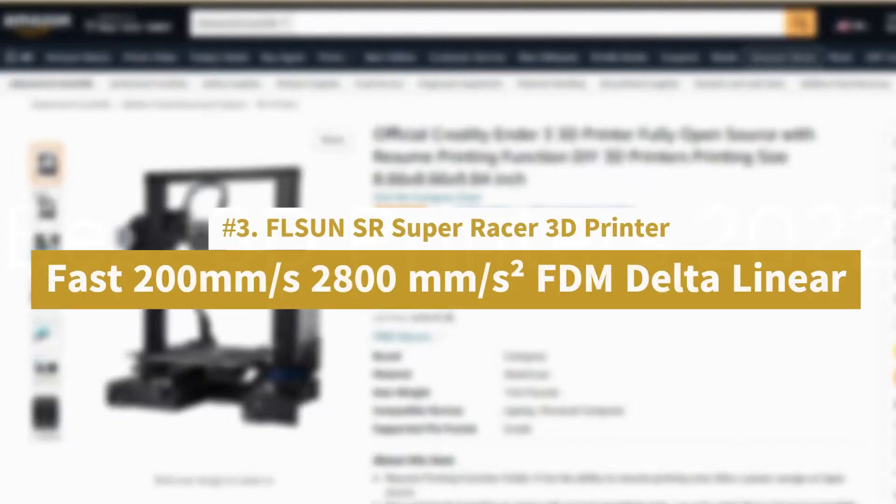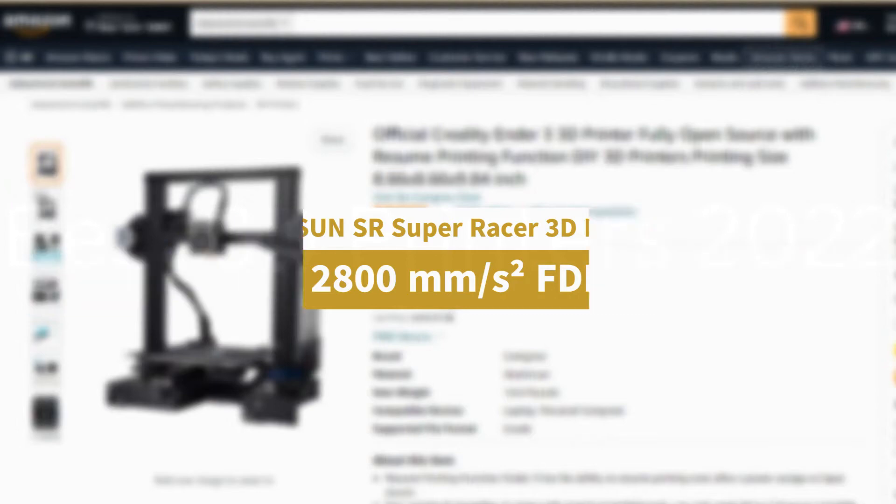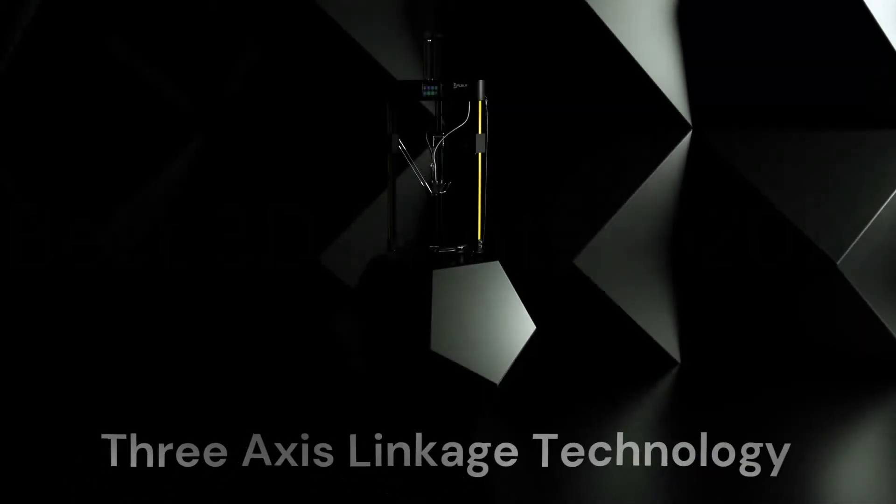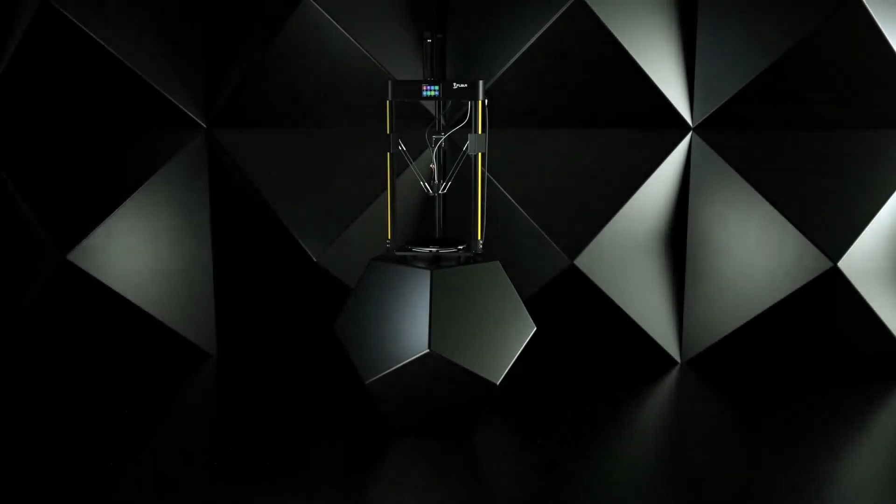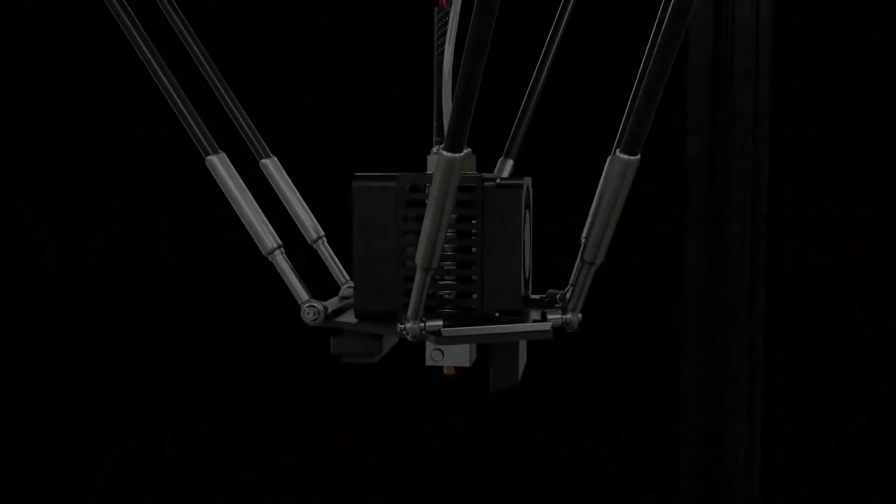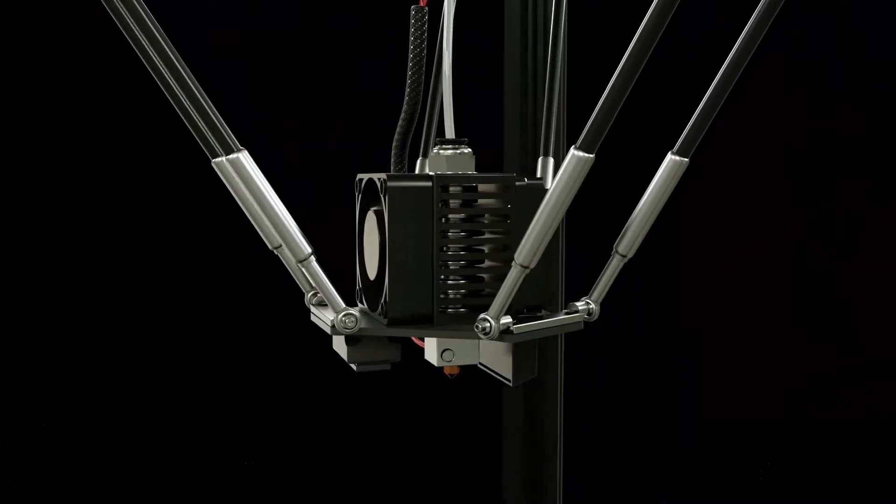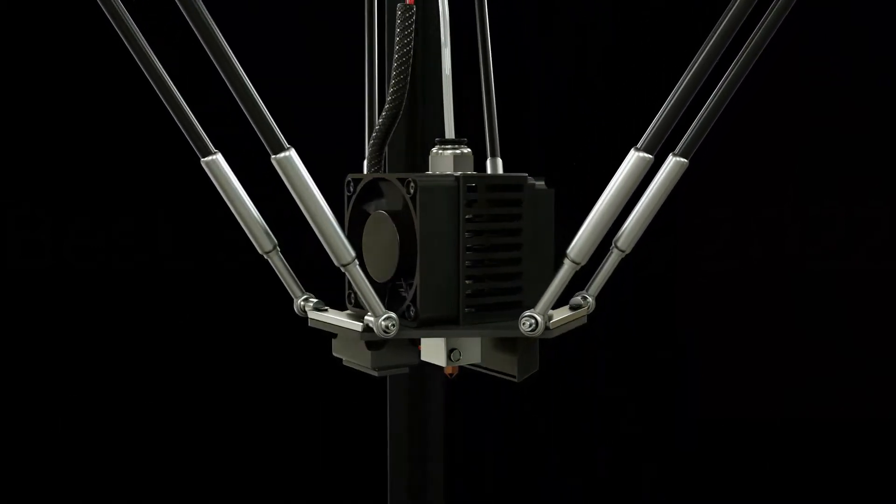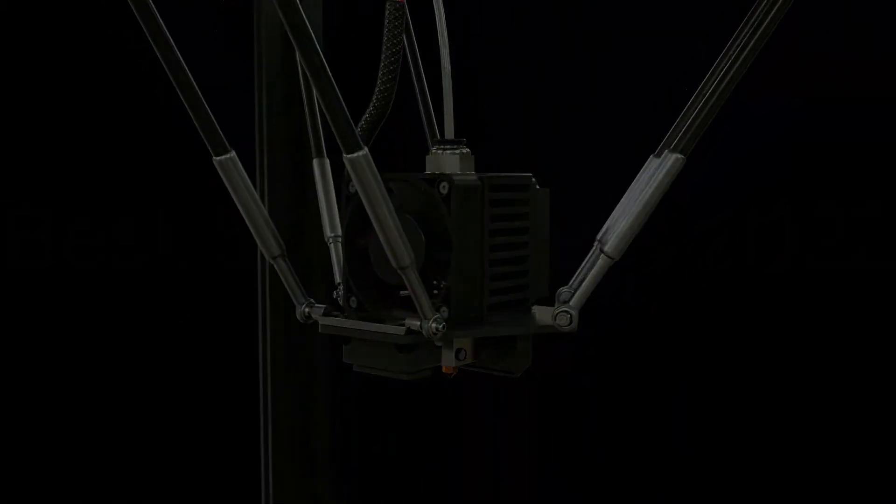Number 3. FLSUN SR SuperRacer 3D Printer Fast 200mm per second 2800mm/s² FDM Delta Linear. 200mm per second high-speed printing and 2800mm/s² acceleration and 3-axis linkage technology. Equipped 3X48W high-power stepper motor and 3-axis linkage technology support a normal printing speed of FLSUN SuperRacer SR 3D printer up to 200mm per second and 2800mm/s² acceleration.